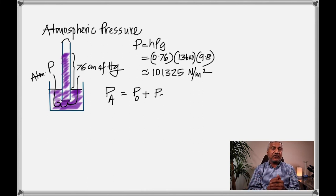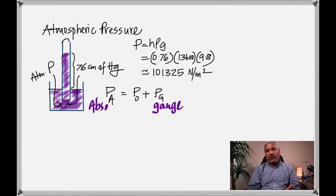The atmospheric pressure equals the pressure exerted by 76 cm of mercury: 0.76 × 13,600 × 9.8 ≈ 101,325 N/m² or roughly 10⁵ Pascals. When measuring tire pressure with a gauge, the reading is not the actual pressure — it shows what's over and above atmospheric pressure. To get the absolute pressure, add atmospheric pressure to gauge pressure: absolute pressure = atmospheric pressure + gauge pressure.